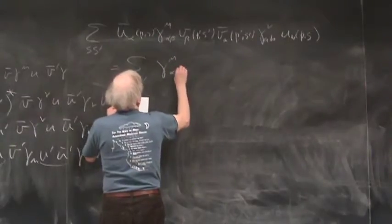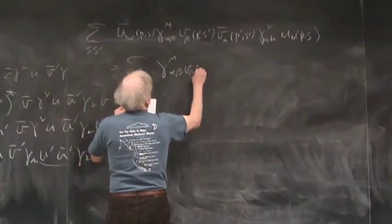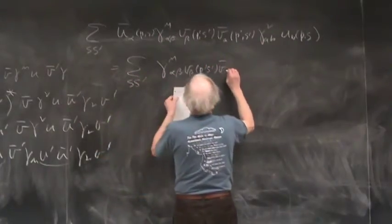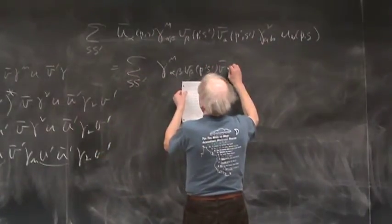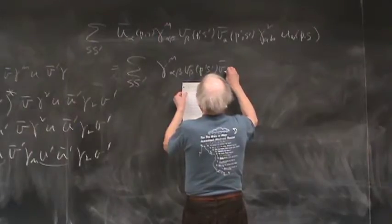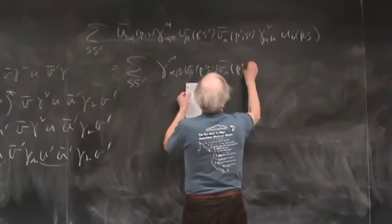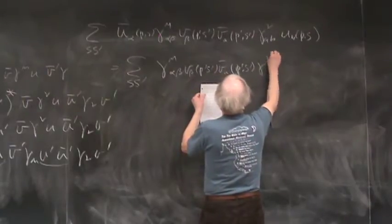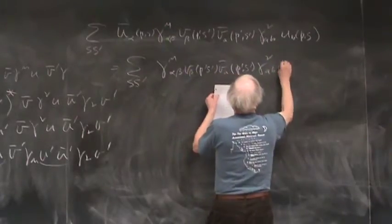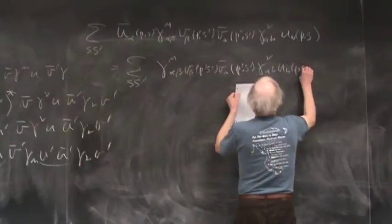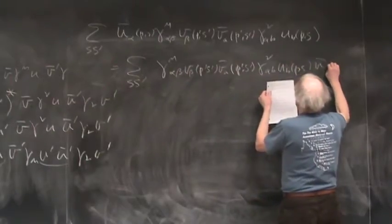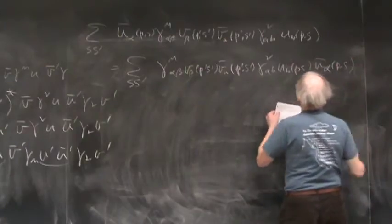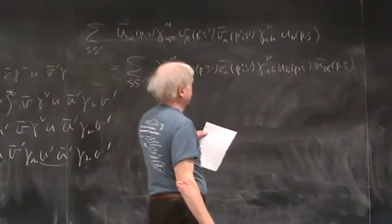And now you've got projection - when you sum you've got a projection operator there, you've got a projection operator here. And now what we're going to do is, well let me follow my notes. Let's just look at the sum over s. We're just looking at the electron part. So what do we have?